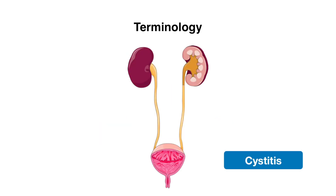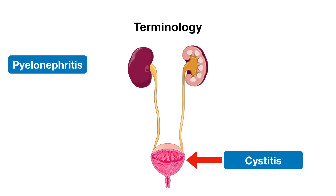Let's begin with some basic terminology. When we talk about urinary tract infections, also known as cystitis, this is an infection of the bladder or of the lower urinary tract. The term pyelonephritis refers to an infection of the kidney or of the upper urinary tract.